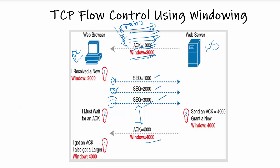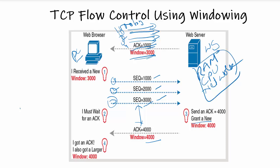This new window size is based on RAM availability, CPU availability, and network resource availability on the web server. This window size will slide — it could be any number. It has been given as 4000, but it could be 40,000 or 400,000 depending on the availability of RAM, CPU, and network on the web server. This window slides up and down, which is why it is called flow control or a sliding window.